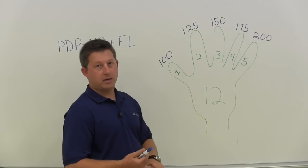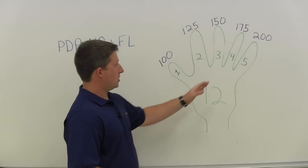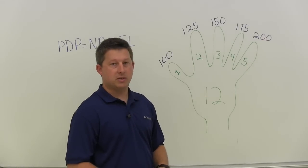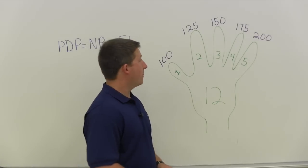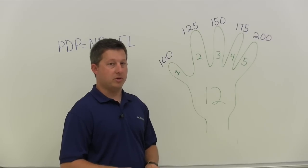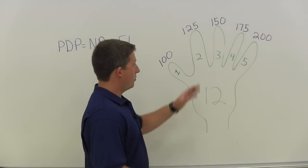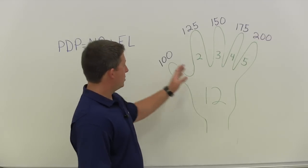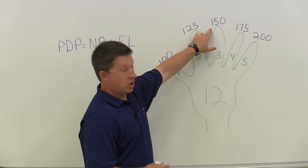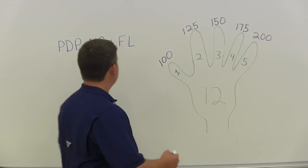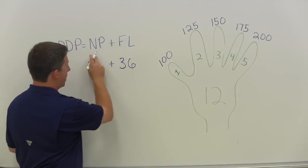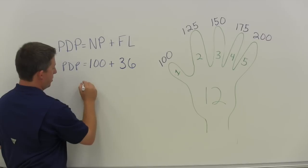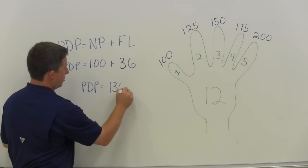You can do that with any combination of length or gallonage. For instance, at 150 gallons per minute, we multiply 3 times 12, which is 36 — so there's 36 PSI friction loss per 100 feet of hose. That's only telling you the friction loss, not the pump discharge pressure. So using 100 feet of inch and three-quarter hose flowing 150 gallons per minute with a 100 PSI fog nozzle: friction loss is 36, nozzle pressure is 100, so the pump discharge pressure will equal 136 PSI.